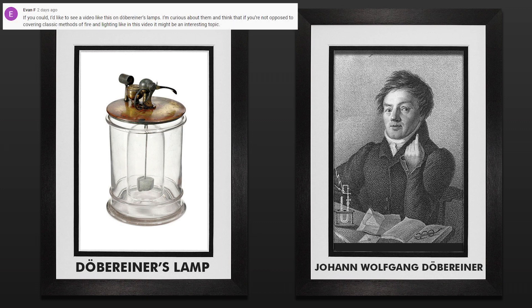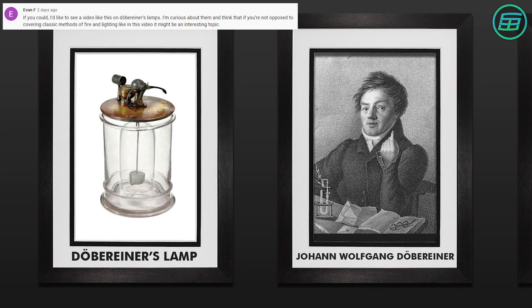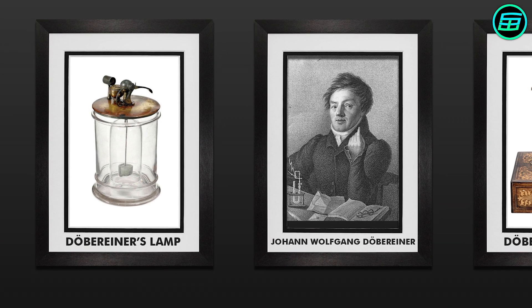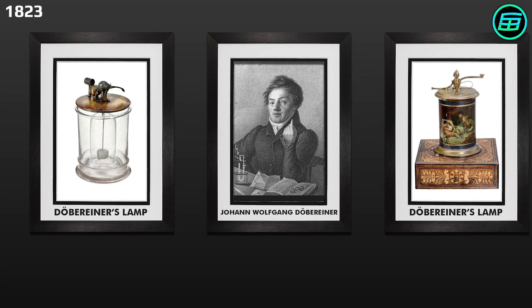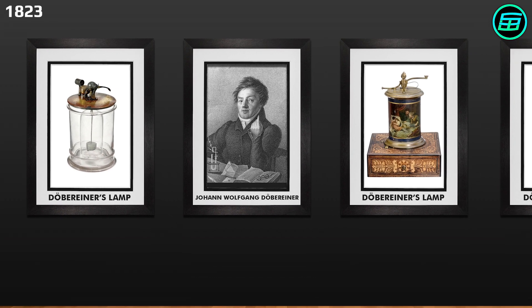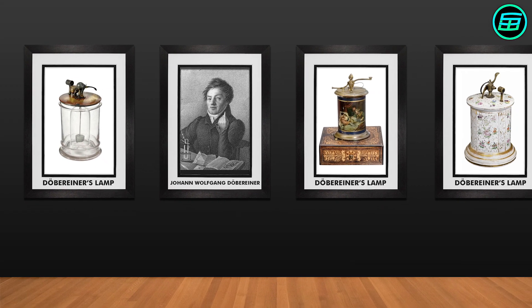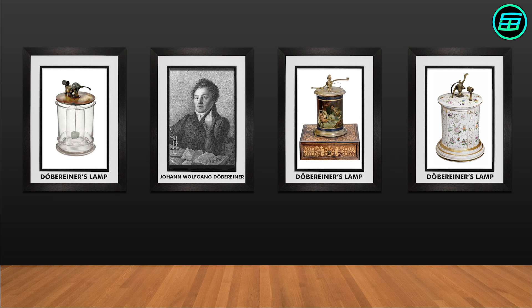Döbereiner's lamp was the very first lighter invented by German chemist Johann Wolfgang Döbereiner in 1823. Because its working mechanism is completely different, it doesn't look like a modern lighter. There's no gas and no flint. It's all about chemistry.